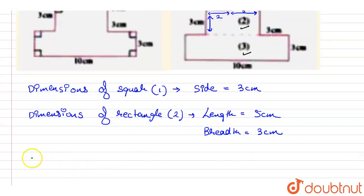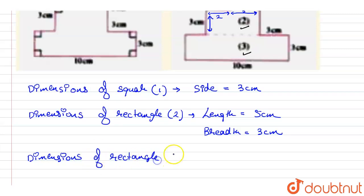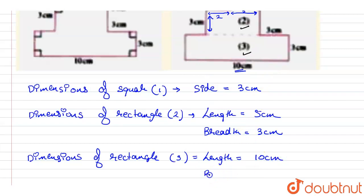Now, the dimensions of rectangle number three: the length is straightaway given as 10 cm — that is this whole side. The breadth is given as 3 cm, that is this particular side.